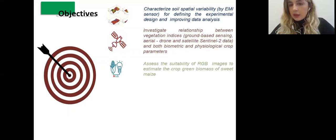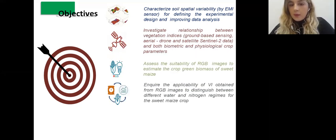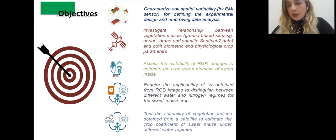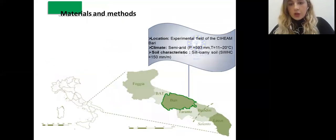First, we tried to assess the suitability of red, green, blue images to estimate the crop green biomass of sweet maize, to inquire the applicability of vegetation indices obtained from RGB images, in order to distinguish between different water and nitrogen regimes for sweet maize crop. And we test the suitability of vegetation indices obtained from the satellite, to estimate the crop coefficient of sweet maize under different water regimes.